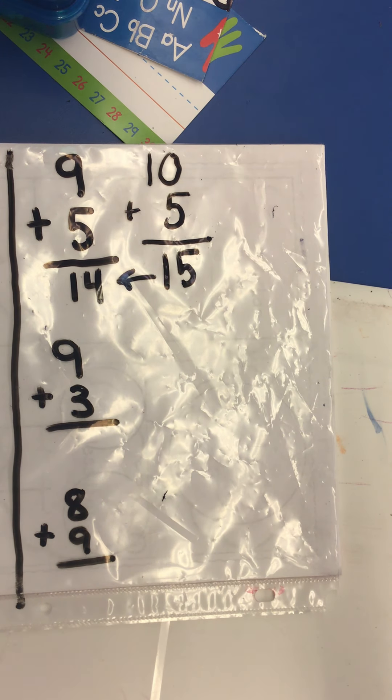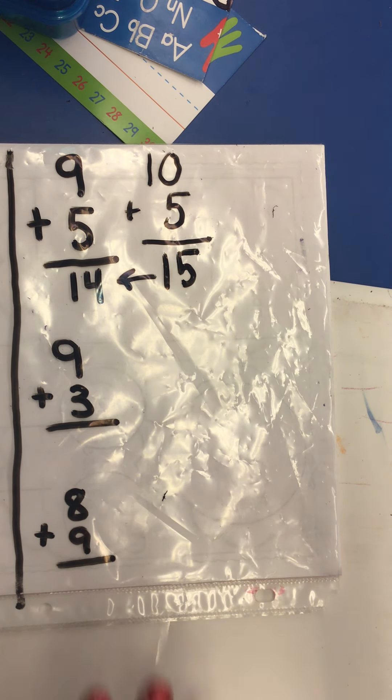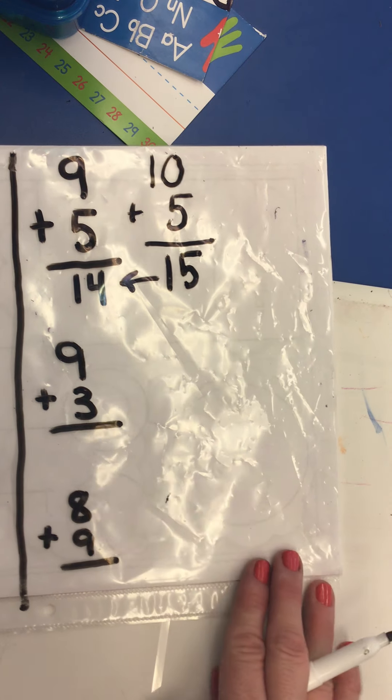So that's a strategy, a plus nine strategy. That is similar to the making 10 strategy, but it's just kind of a different way to think about it, a different way to say it.